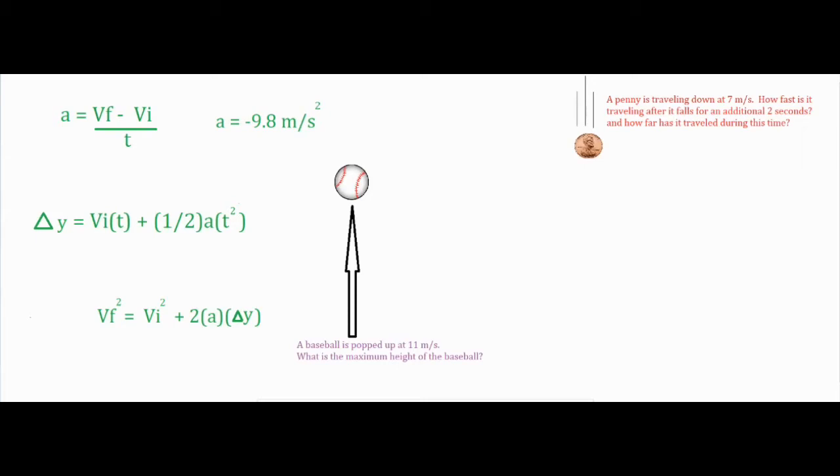So the very first thing we're going to do for all calculations is always label our known variables, and our goal is to try to get three variables. The reason I say three is because all of these equations have four variables, which means if you have three then you're able to solve for a fourth, which will either be your answer or a number that you can use to get one step closer to your answer.